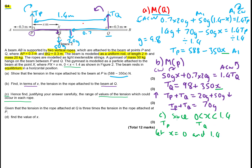The range of Tp: substituting x equals 0 and x equals 1.4 gives Tp between 98 and 588 Newtons. For Tq: when x equals 0 you get 98, and when x equals 1.4 you get 1.4 times 350 plus 98, which gives 588. So both Tp and Tq range between 98 and 588 Newtons.